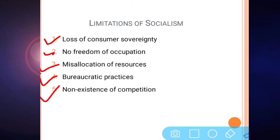The last limitation is the non-existence of competition. Healthy competition is a necessary requirement for market development. But in socialism there is no competition — we can say there is a public sector monopoly. Even if there are more than one government-run companies, they are not actually competing with each other as production is controlled by the government. In the absence of such competition, companies are not motivated to conduct innovative work or research activity, which ultimately leads to loss for society, customers, and the economy.